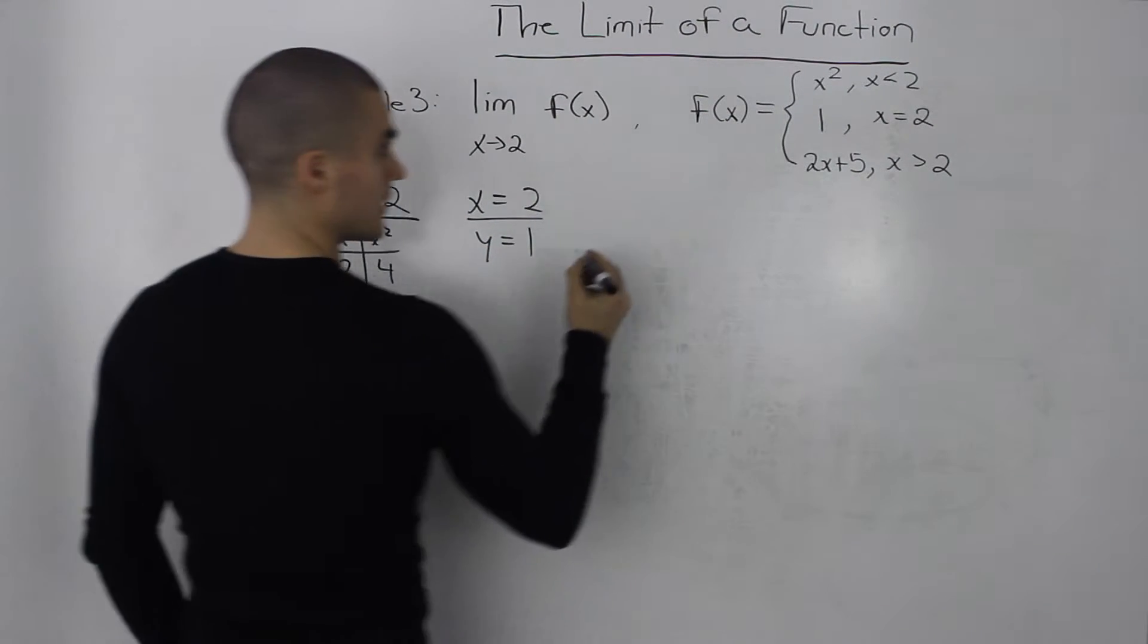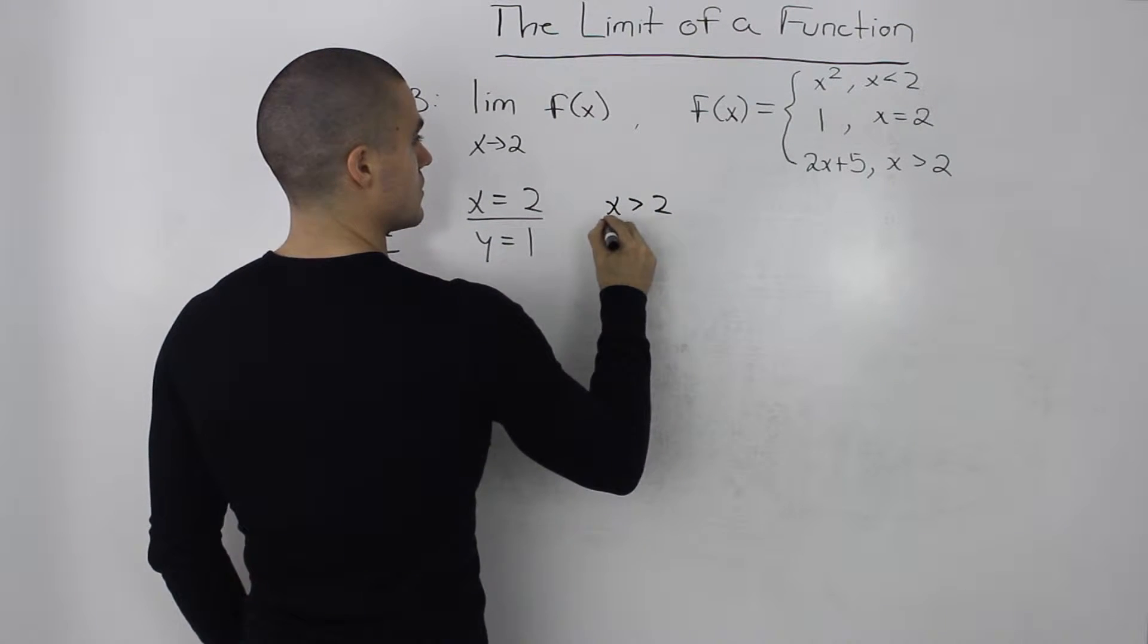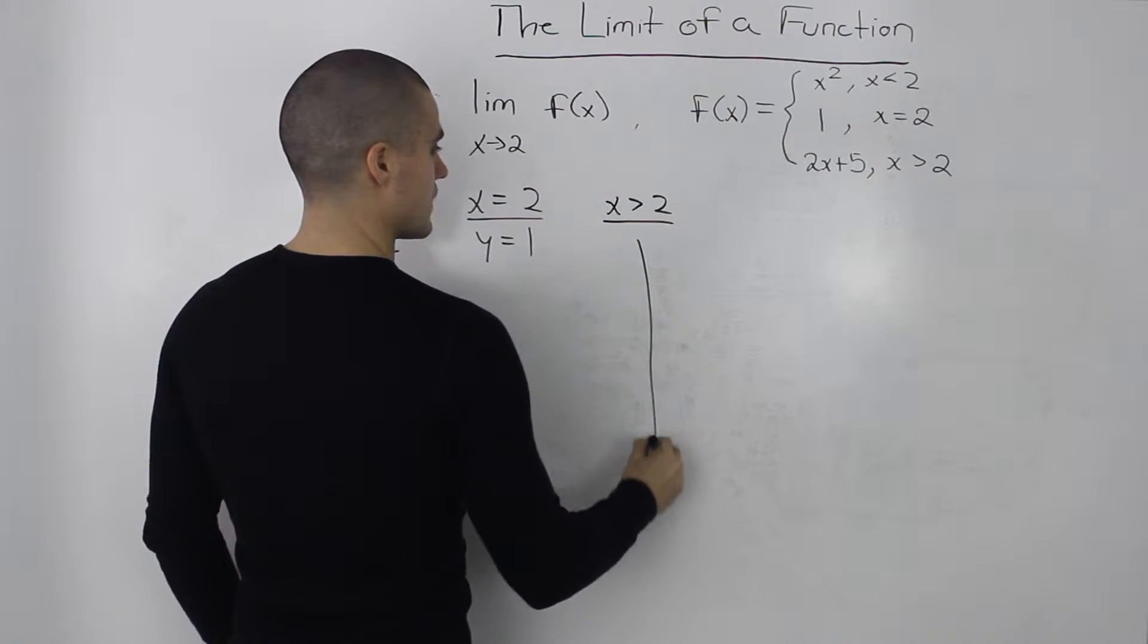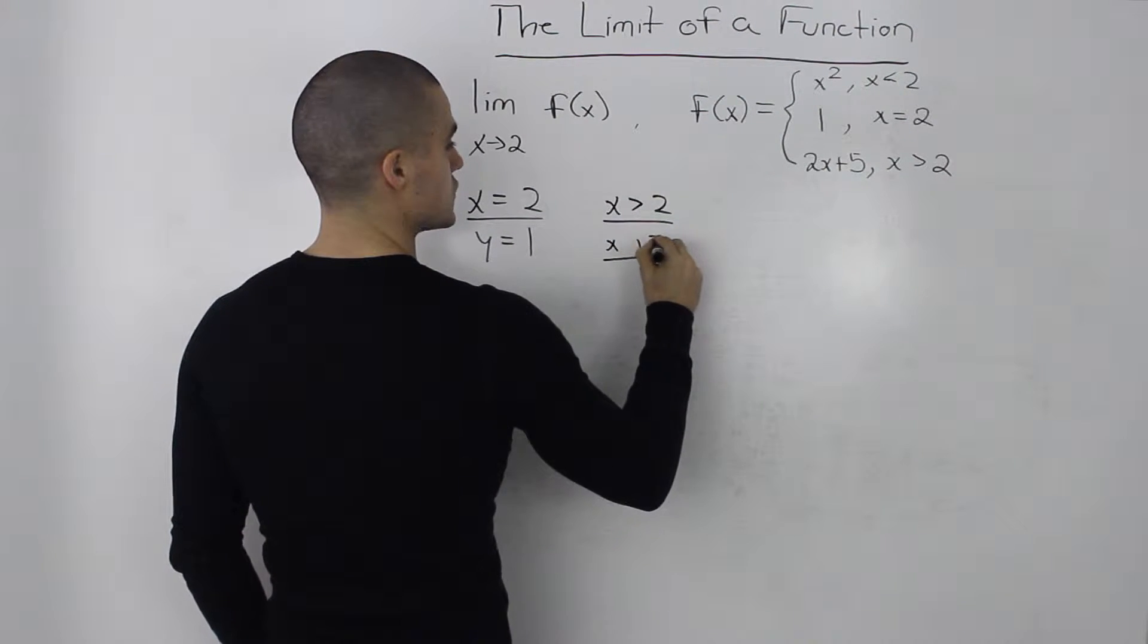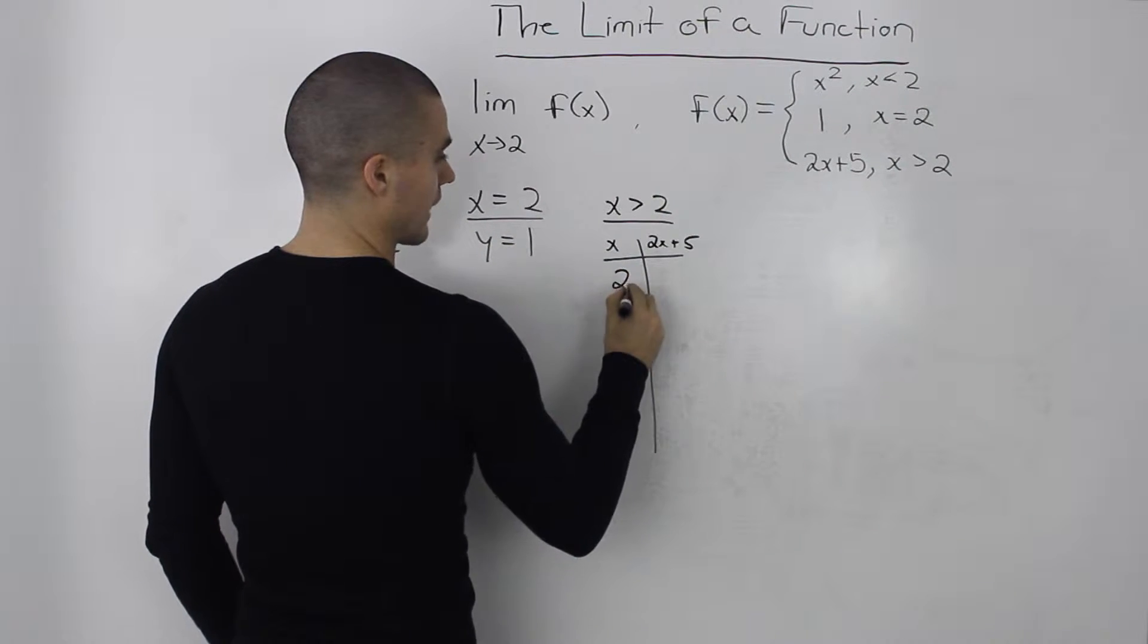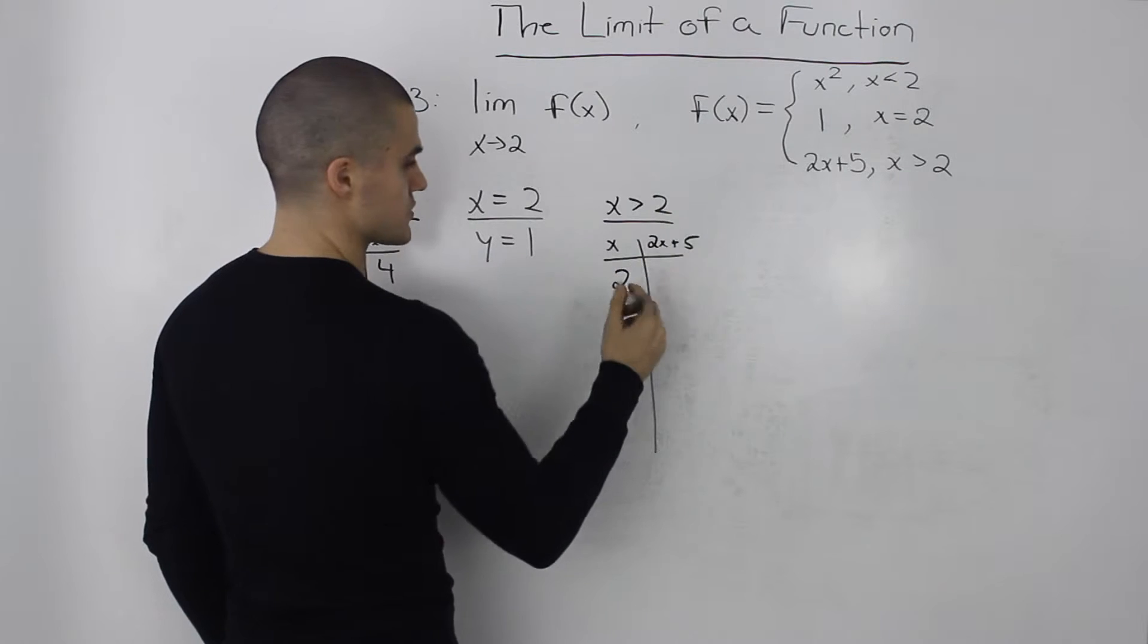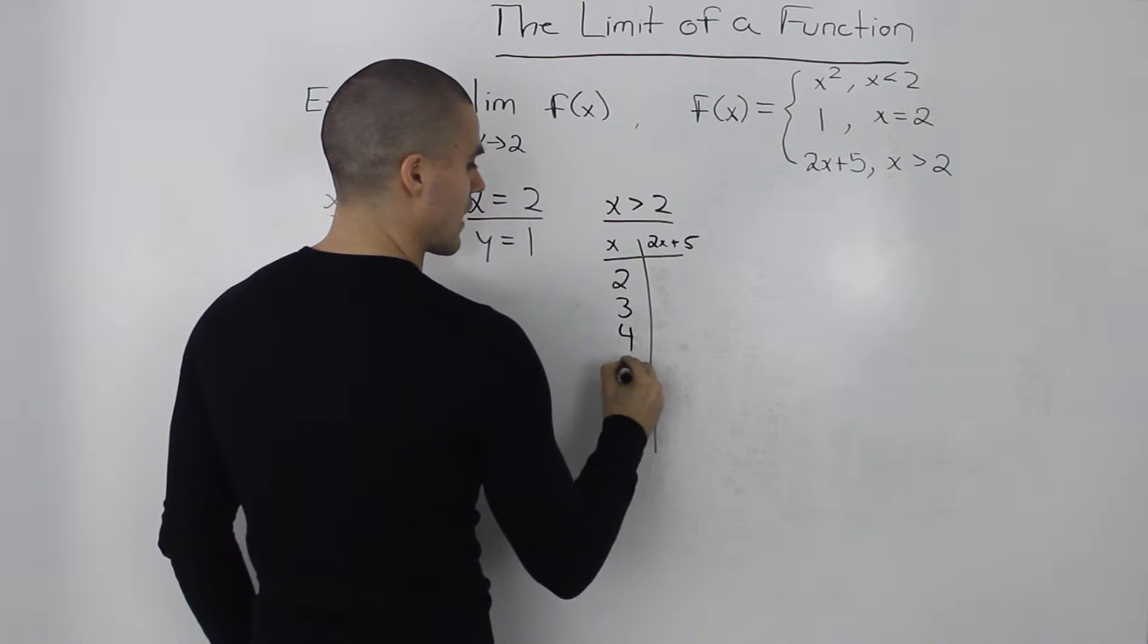And when x is greater than 2, then let's make a table of values here. The y value will be 2x plus 5. So let's start with 2 and then pick numbers that are greater than 2. So let's try 3, 4, 5, 6.